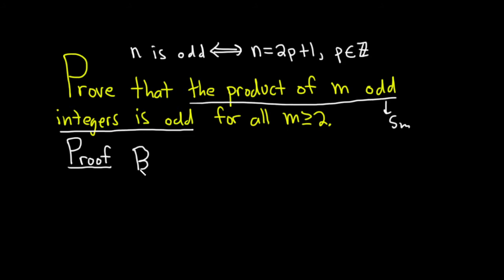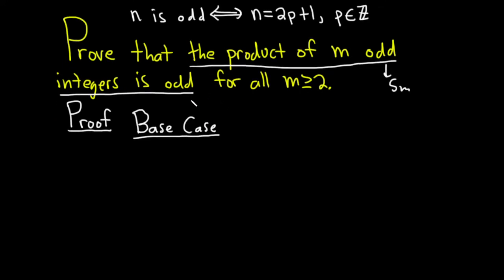The first step in an induction proof is the base case. In the base case, we have to show that our statement is true for the smallest positive integer in question. In this case, the smallest positive integer in question is m equals 2. So in other words, we have to show that the product of two odd integers is odd. To do that, we'll just take two odd integers and look at their product.